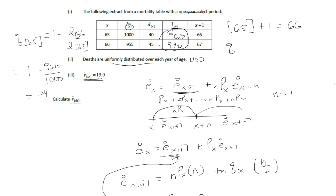So Q of 66 is going to be 1 minus, and then it's 910 over 960, which is 50 over 960.